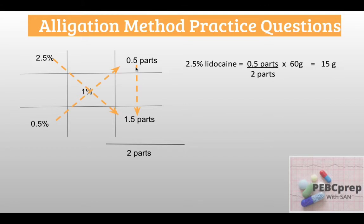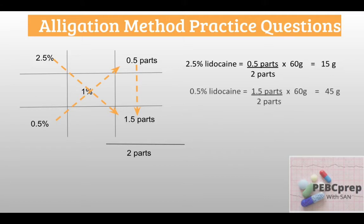We add the parts together to get 2 total parts, then calculate the proportion for each lidocaine. For 2.5% lidocaine: 0.5 parts divided by 2 parts multiplied by 60 grams — we get 15 grams. For 0.5% lidocaine: 1.5 parts out of 2 parts multiplied by 60 grams — we get 45 grams.